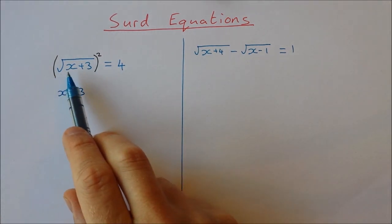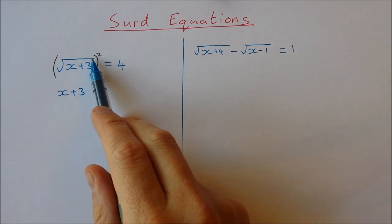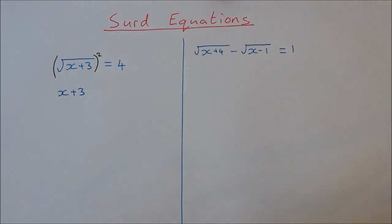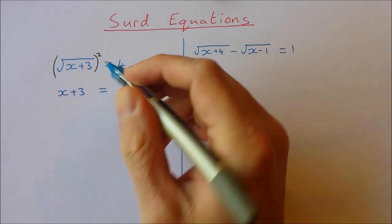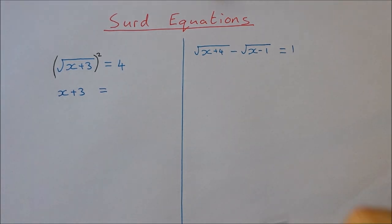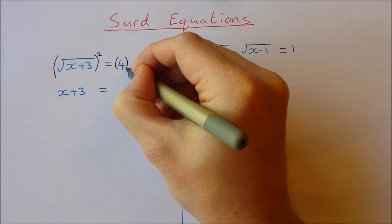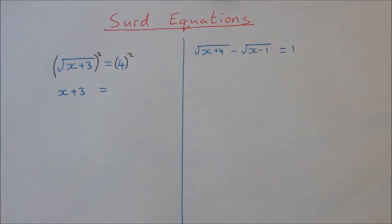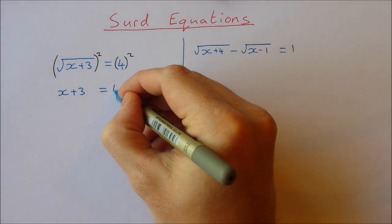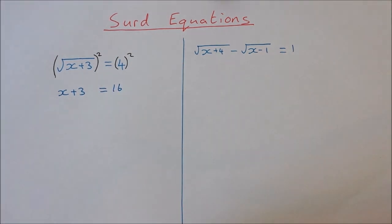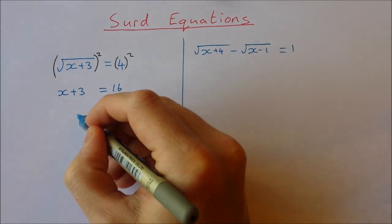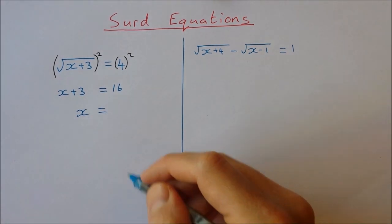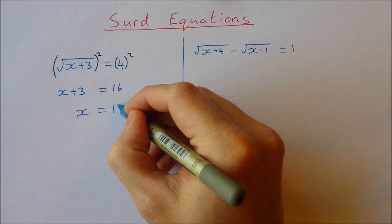The square root of x plus 3, when squared, is x plus 3. But because we're dealing with equations, if I square one side I have to square the other side. So I end up getting x plus 3 is equal to 16, which means x is equal to 16 minus 3, which is 13.